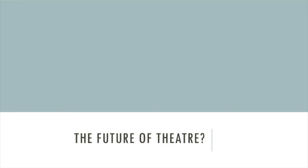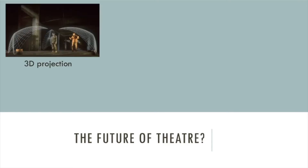Then we've got to think about the future of theatre — because where is technology going to take us? Technology has changed so much in the last 20 years. Where is it going to go in theatre? Well, there are a few ideas. Here's a picture of people using 3D projections. Instead of just projecting onto a flat wall, we can project three-dimensional images and objects. Maybe it would be used in sci-fi, or to make it look like there's a particular object on stage. Either way, it's a really cool idea — kind of like a hologram.